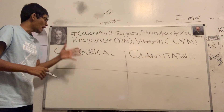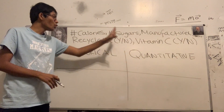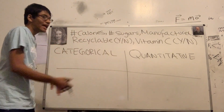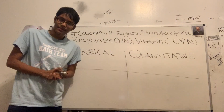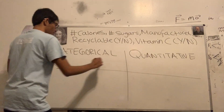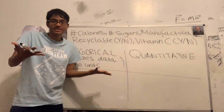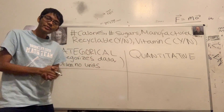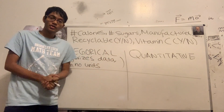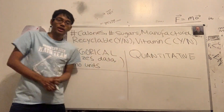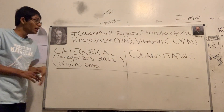We've got categorical variables, also called qualitative, or we've got quantitative variables. A categorical variable is a variable which categorizes data — which is pretty evident. That could be a yes or no question. For example, a poll worker might ask: Are you voting for Biden or are you voting for Trump? If you say Biden, you fall under the Biden category; if you say Trump, you fall under the Trump category. That's a categorical variable.